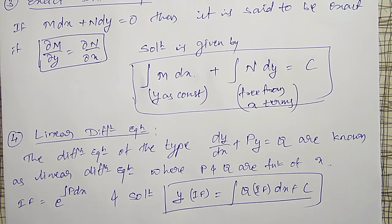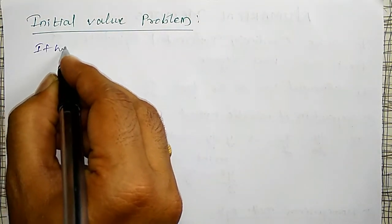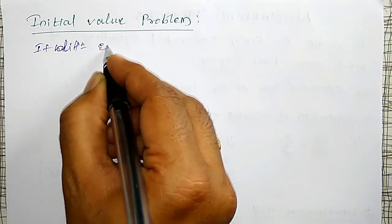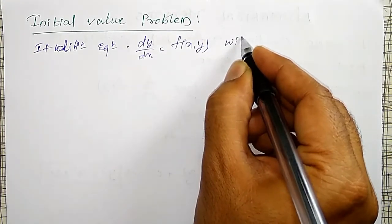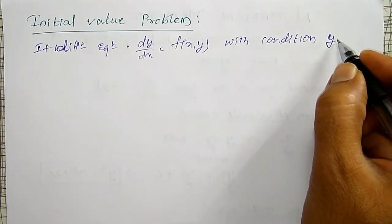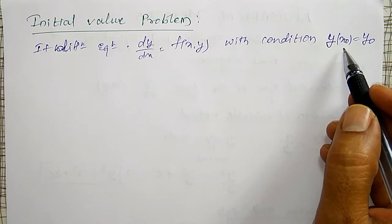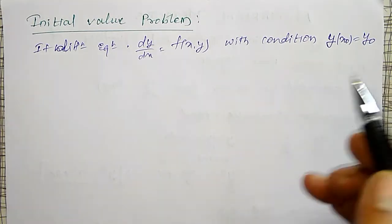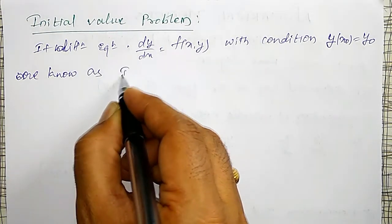These are all exact methods. Now, numerically, how do we solve them? We will discuss one method at a time. Initial value problems: the differential equation dy by dx equal to f of x, y with the initial condition y of x0 equal to y0, that is, the y value at x equal to x0, are known as initial value problems.